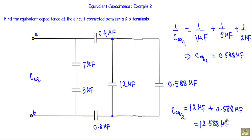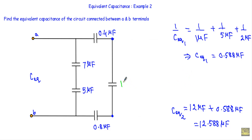That means I will replace the 12 µF and the 0.588 µF with a single equivalent capacitor of 12.588 µF, which is the equivalent capacitance of those two parallel capacitors.